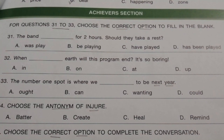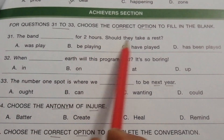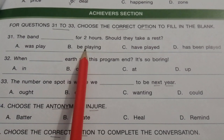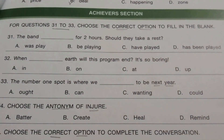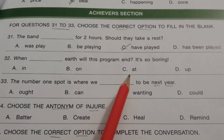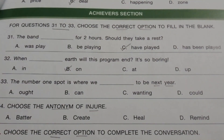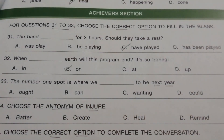The next topic is the Achievers Section. Question 31: 'The band dash for 2 hours. Should they take a rest?' The answer is C — have played. Question 32: 'When on dash will this program end? It's so boring.' The answer is B — on: 'When on Earth will this program end?' Question 33: 'The number one spot is where we dash to be next year.' The answer is A — ought: 'Where we ought to be next year.'